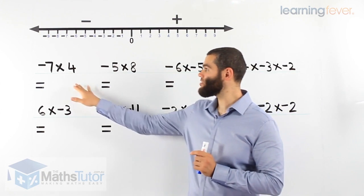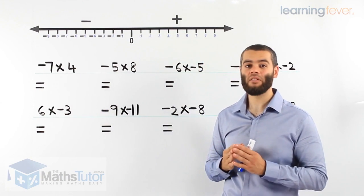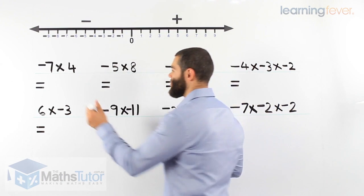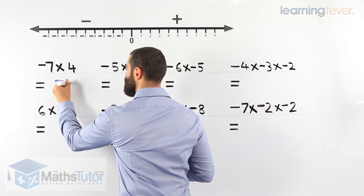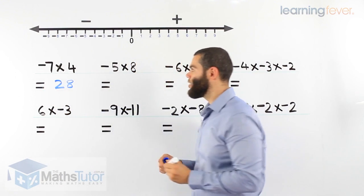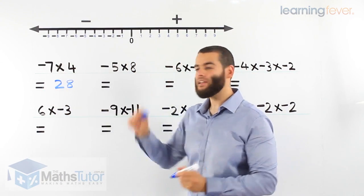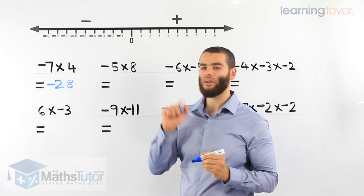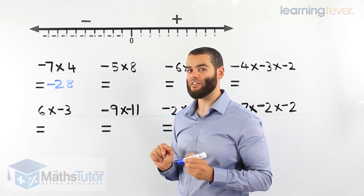We have the first example here, negative 7 times 4. We know that 7 times 4 is 28. We have one negative, so we put it in the answer because we have one negative in the question, we put it straight in the answer.